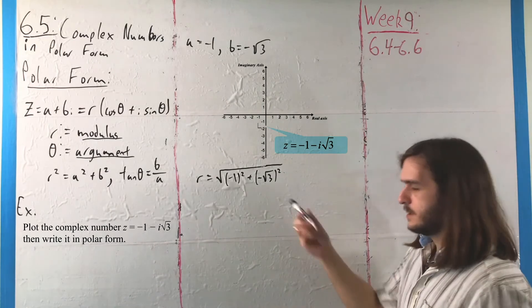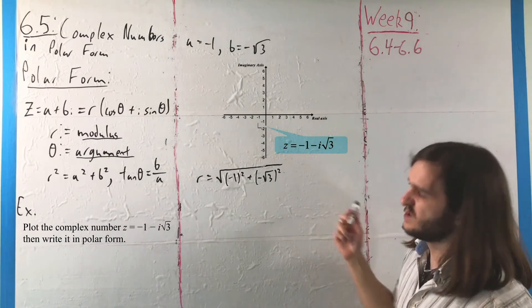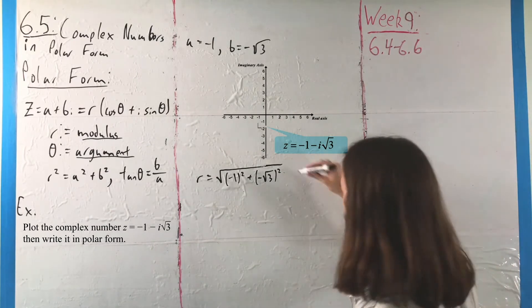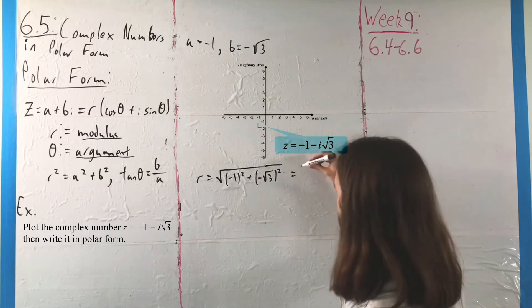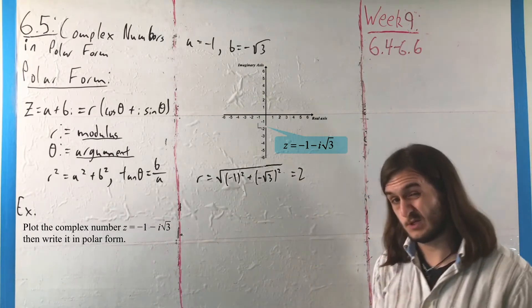The square of -√3 is 3, the square of -1 is 1, so the modulus ends up being 2.